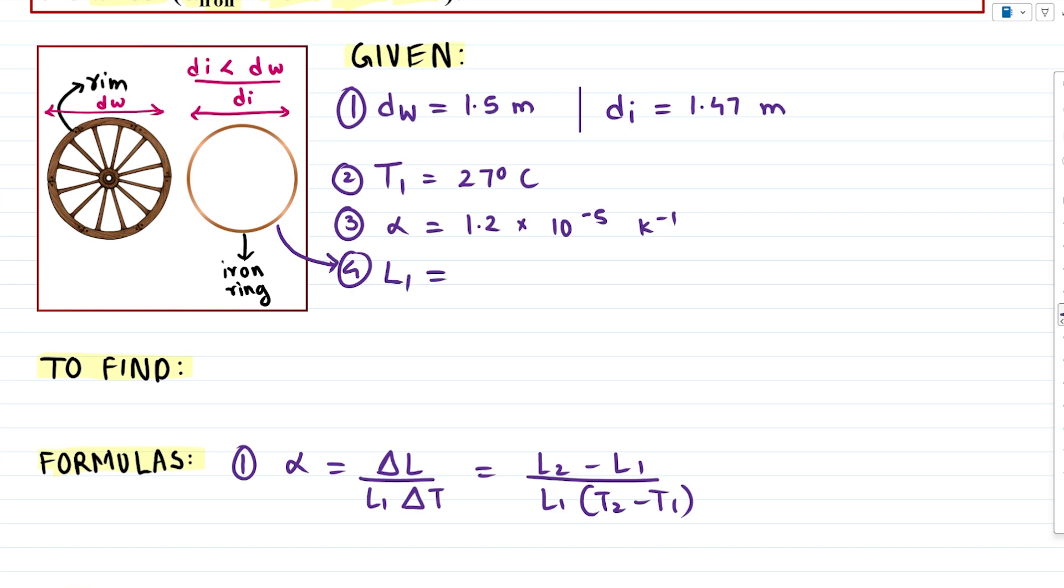And the final length, how long to heat it? The ring will fit when its diameter is equal to the wheel diameter. So the final desirable length L2 is equivalent to the diameter of the wheel which is 1.5 meters.